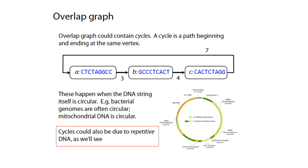Basically, what you see here is this overlap graph has what's called a cycle. A cycle in a graph is a structure where you can start at, say, node A, and if you follow the arrows leading from one node to another, you can go from node A to node B to node C, and make your way all the way back to node A. So there exists a cycle in this overlap graph.